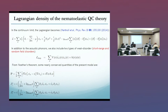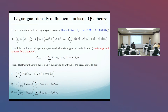We can also write down the Lagrangian of this system. An important thing I want to emphasize is that we have to include some mechanism of momentum relaxation in this theory. We are going to include two types of disorder: short-range disorder, which couples to the fermionic degrees of freedom, and random-field disorder, which couples to the bosonic and fermionic degrees of freedom.